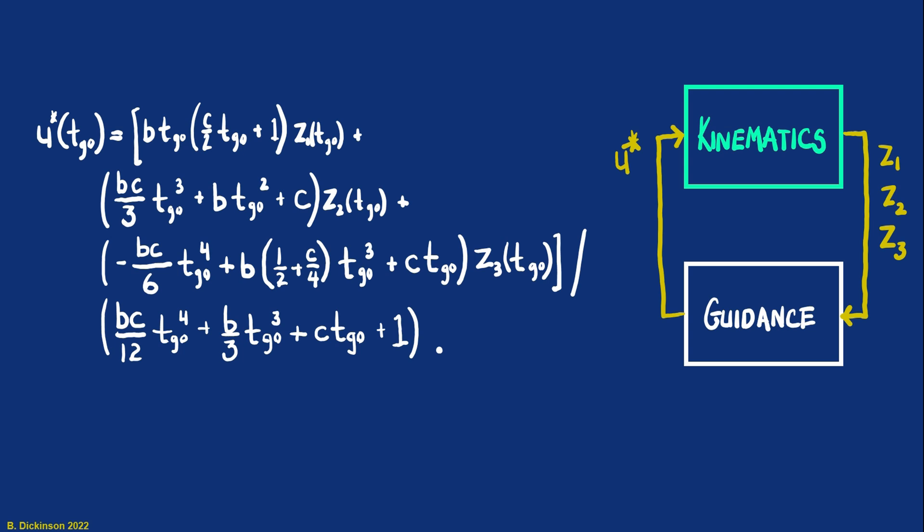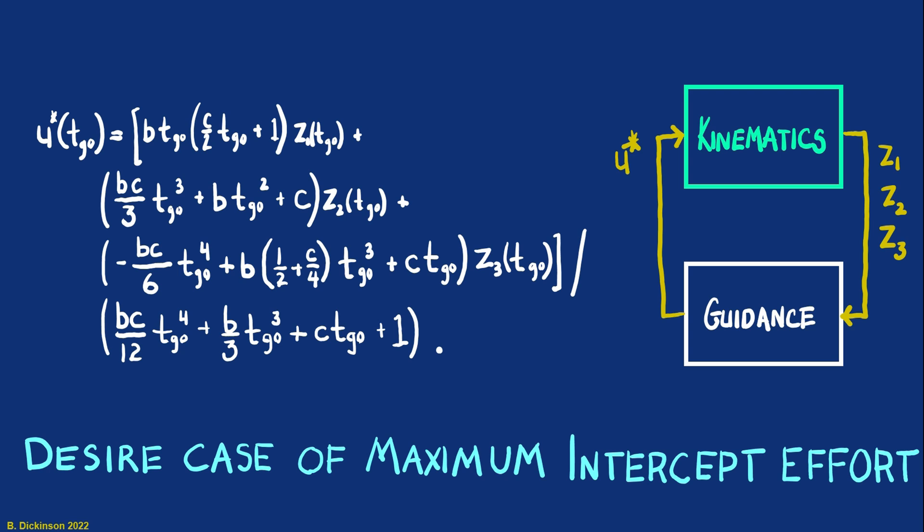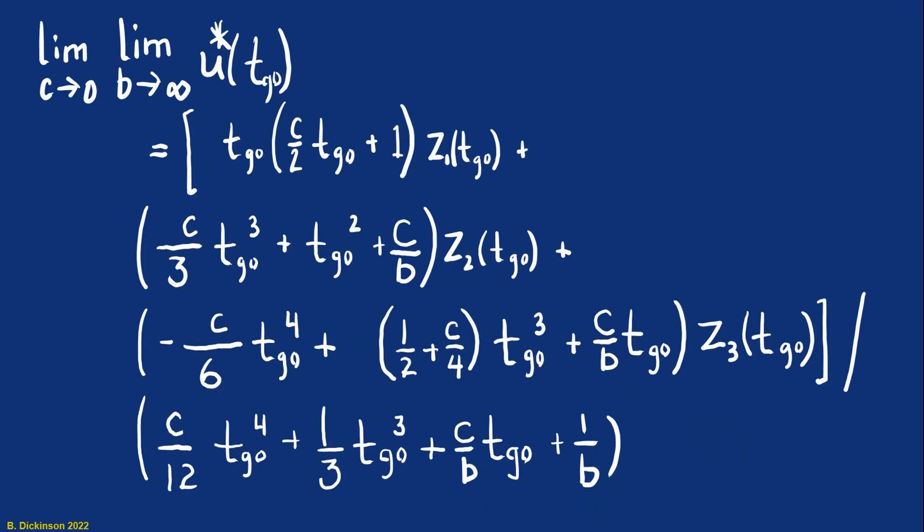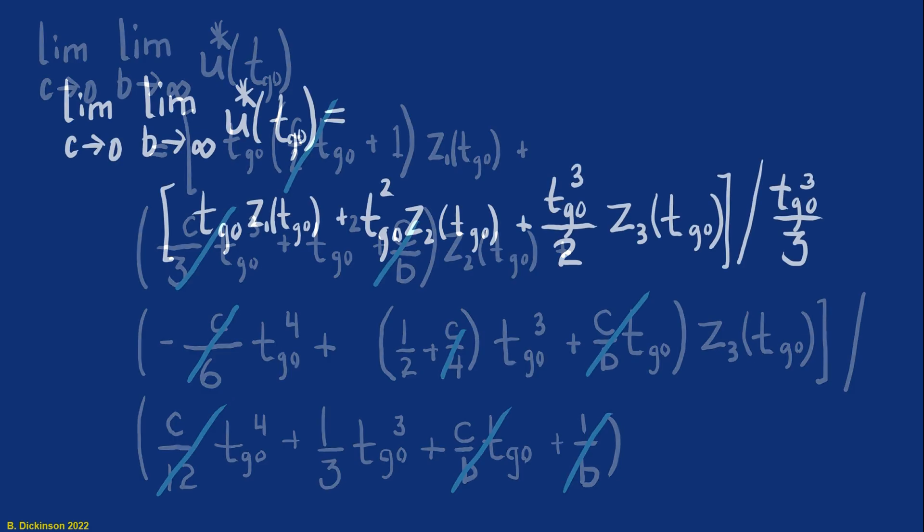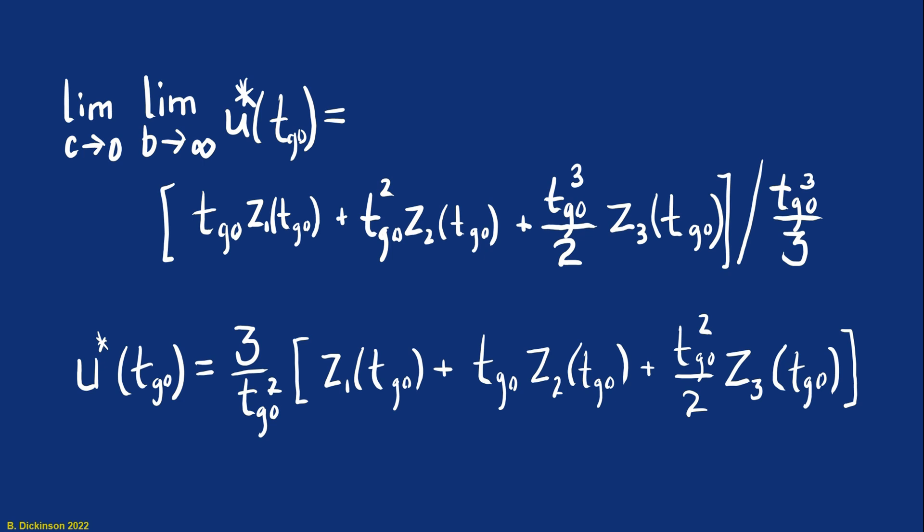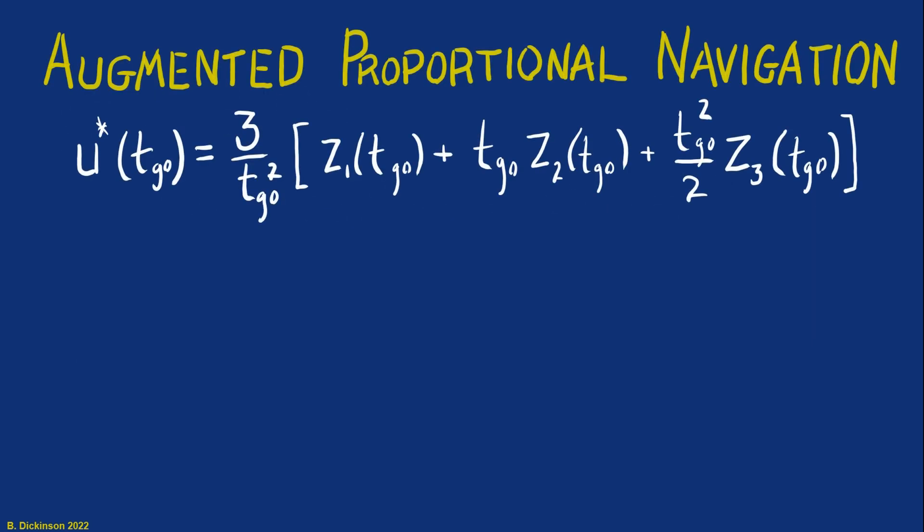Now, let's take this one step further and look at the case of maximum intercept effort, where we're letting the penalty at the intercept time go to infinity. That's b go to infinity. So in taking these limits, I want to multiply by b over b and simplify this expression. So now b goes to infinity, c goes to zero. A bunch of stuff cancels. And all we're really left with is a fairly simplified expression. We can write it as three over time to go times these three terms in the braces. And in fact, what we've determined is augmented proportional navigation.